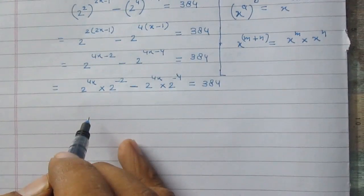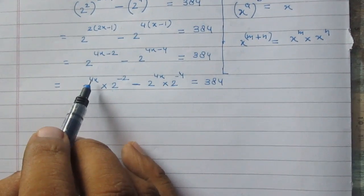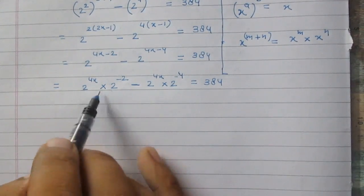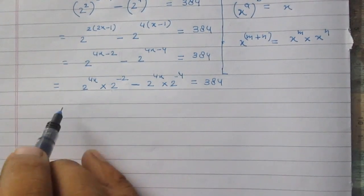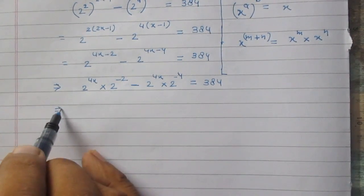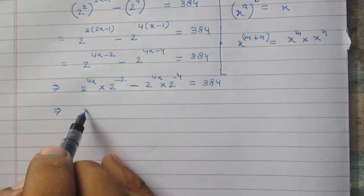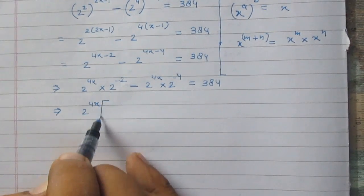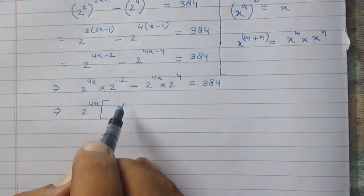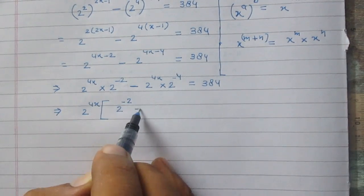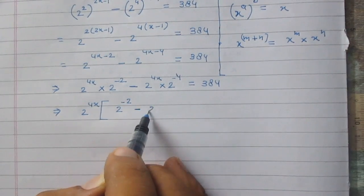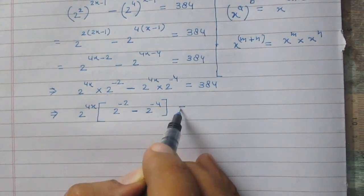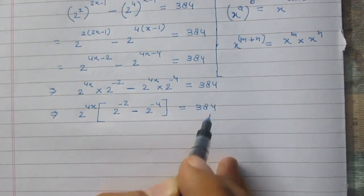We see that 2 raised to the power 4x is a common term. Taking it outside the bracket, inside the bracket we have 2 raised to the power minus 2, minus 2 raised to the power minus 4, and it is equal to 384.